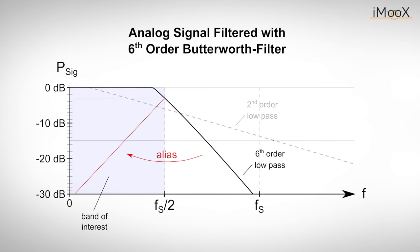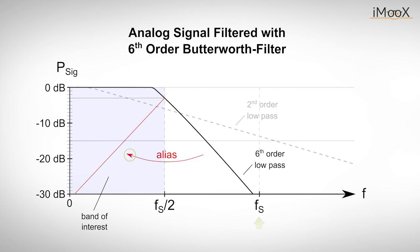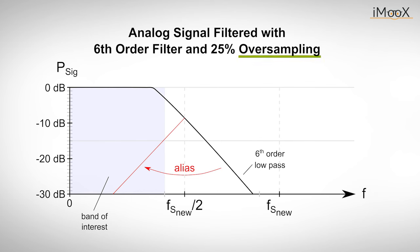To avoid aliasing, we have two options. First, we can choose a filter of higher order, which results in a steeper slope at the cutoff frequency. In this case, a six-pole Butterworth was introduced as a so-called anti-aliasing filter, with its cutoff frequency set at half the sampling frequency. As you can see, we get better results, but there is still some aliased signal present. Fortunately, there is another way: we can simply raise the sampling frequency. This technique is called oversampling, and it gives our filter a guard band in which to transition from pass band to stop band, improving the situation significantly.